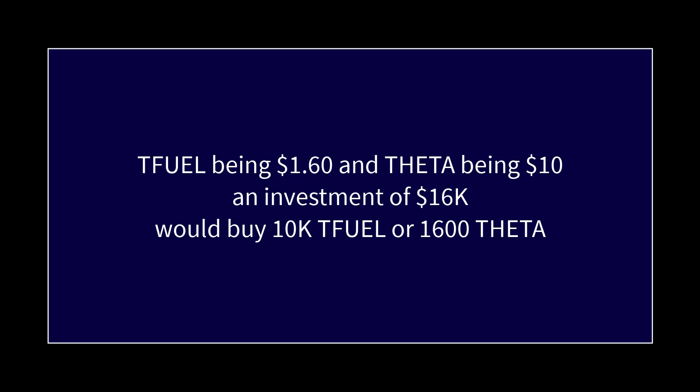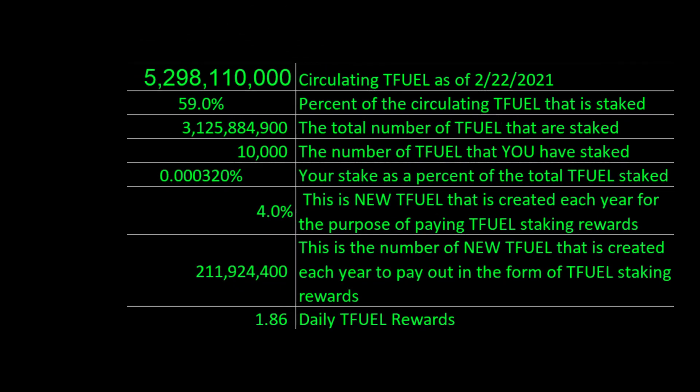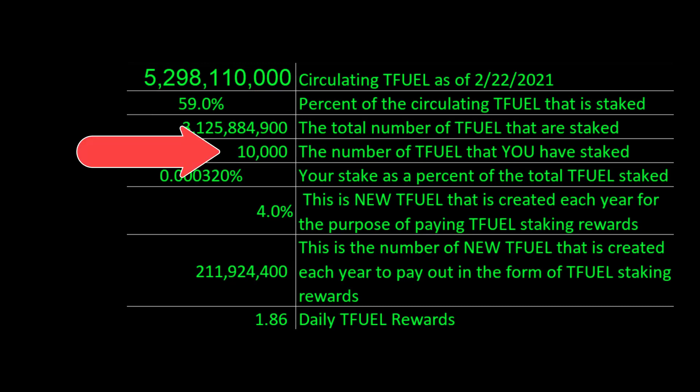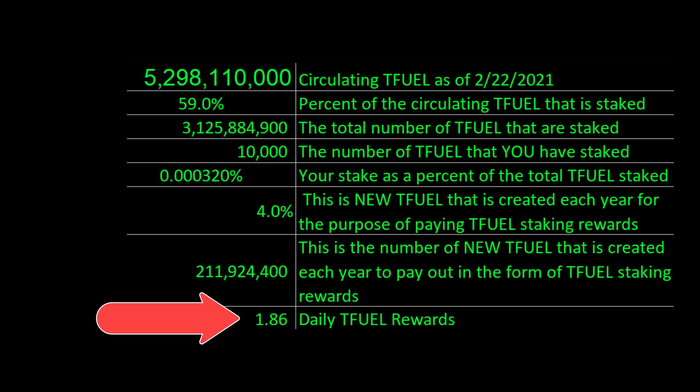Now let's look at what the minimum amount of TFuel staked will give in TFuel staking rewards using a spreadsheet. I've set the percent staked of TFuel to 59%, the same as the percent of Theta that is staked, and set the amount of TFuel staked to the minimum — 10,000 — the amount we could buy with $16,000. The daily TFuel staking reward comes out to 1.86, which is in the neighborhood of the reward you'd get for staking 1,600 Theta.